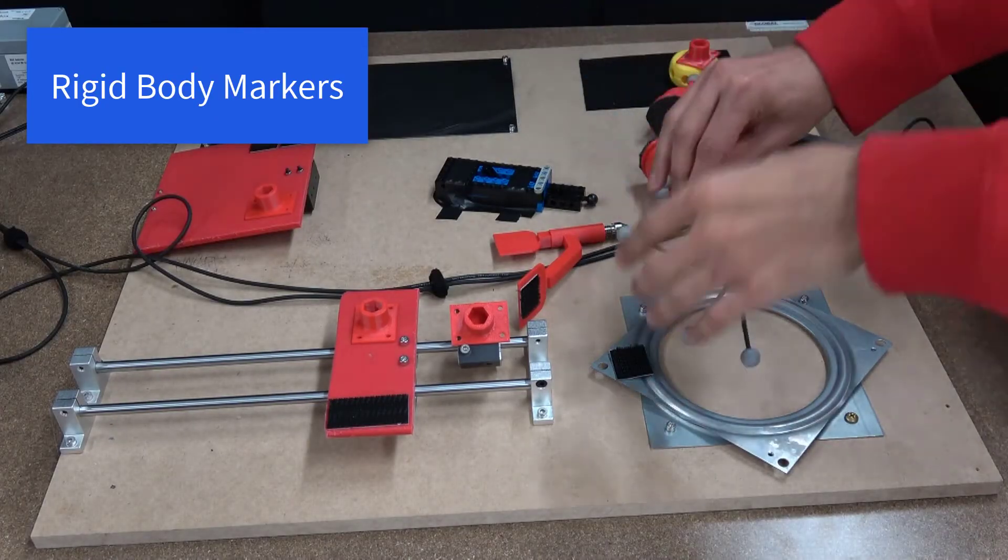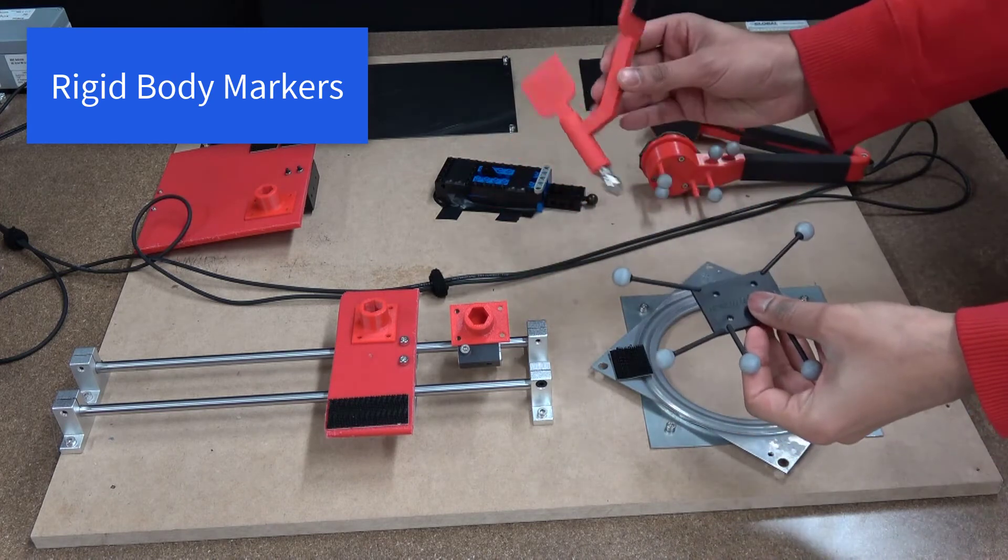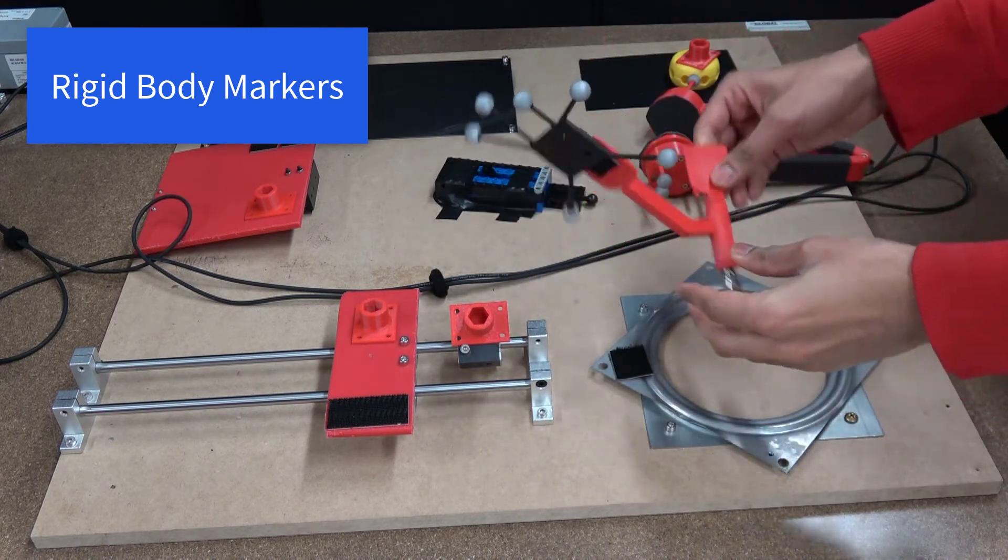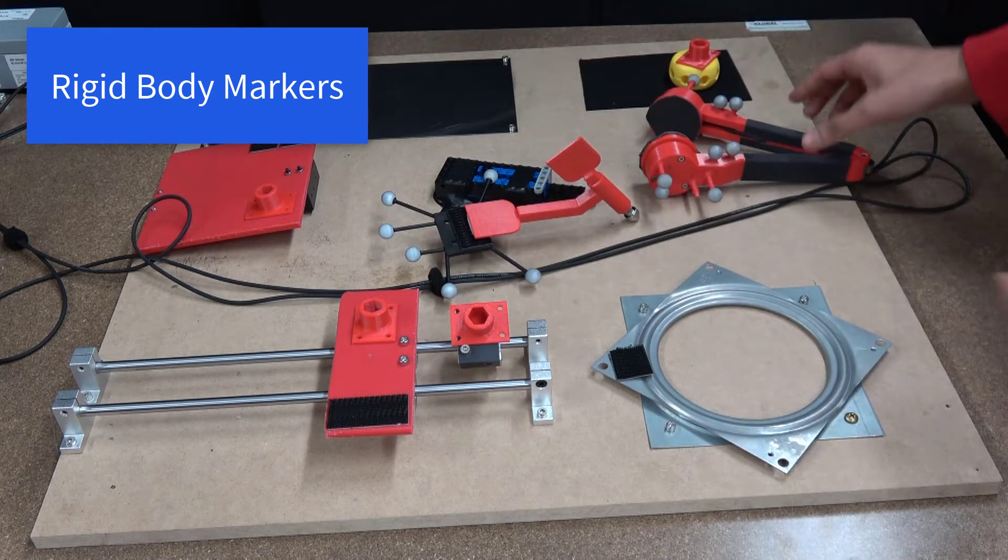When we use the instrumented tongs, motion capture markers are placed on the constrained object. These markers may be placed at any location on the object as long as they are rigidly attached to the object.